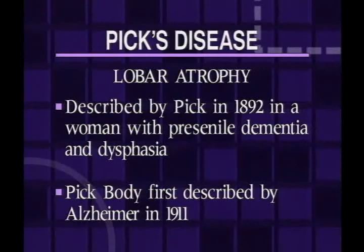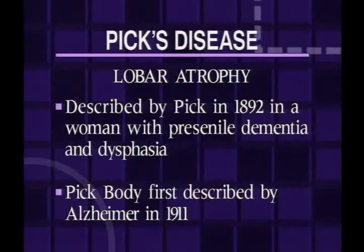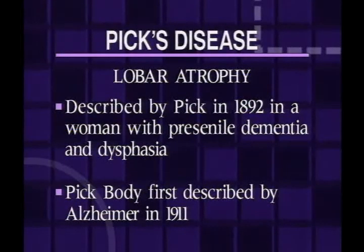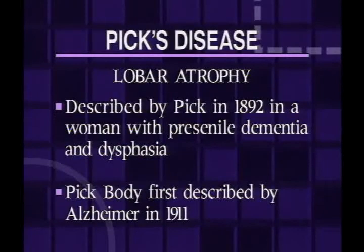Another type of disease that can cause specific atrophy of either the frontal or temporal lobes is Pick's disease. Pick's has the old term of lobar atrophy. It's an old disease, described by Dr. Pick in 1892 in a woman with pre-senile dementia and dysphagia, which was produced by damage primarily to her temporal lobe. The Pick body, which is the characteristic microscopic finding, was first described by Alzheimer in 1911.